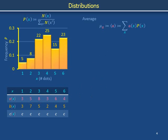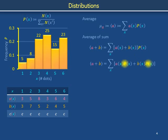Before moving on to the variance, we provide some useful identities relating to the average. We will use the table to construct an example of the average of a sum. We calculate the average of a plus b. The sum a(x) plus b(x) is multiplied by the probability distribution p(x). Multiplying distributively gives a factor of p(x) next to a(x) and another factor of p(x) next to b(x). Breaking the sum into two pieces, we recognize that the first sum is the average of a and the second is the average of b. The average of a plus b equals the average of a plus the average of b.